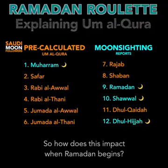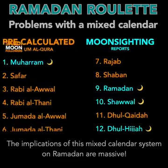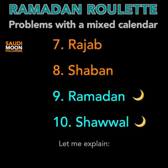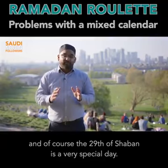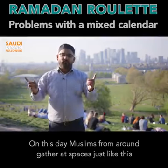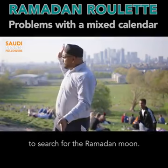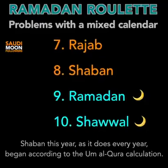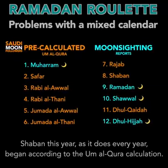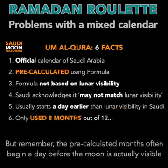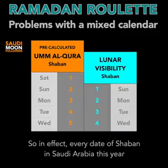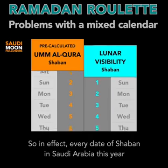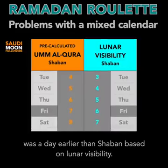So how does this impact when Ramadan begins? The implications of this mixed calendar system on Ramadan are massive. The month before Ramadan is called Shaaban, and the 29th of Shaaban is a very special day — Muslims from around the world gather to search for the Ramadan moon. Shaaban this year began according to the Ummul Qura calculation, but remember, the pre-calculated months often begin a day before the moon is actually visible. And this was the case for Shaaban this year, so in effect every date of Shaaban in Saudi Arabia this year was a day earlier than Shaaban based on lunar visibility.